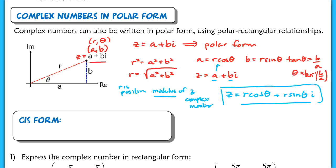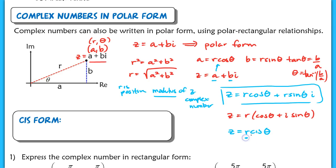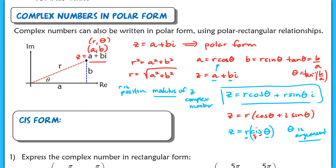The textbook factors out R and writes Z as R times (cosine theta plus i sine theta). Because that's cumbersome to write every time, we shorten it to cis form: Z equals R cis theta. Remember, R is the modulus multiplied by cosine theta, and theta is the argument — another vocabulary term. C represents cosine, S represents sine. So a complex number Z in the form A plus Bi can be converted to polar form R cis theta.